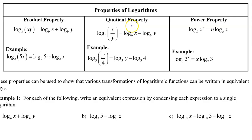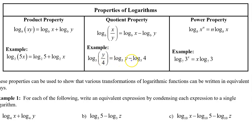Next we have the quotient property. The log of x divided by y can be rewritten as the log of x minus the log of y. For example, the log of y over 4 could be written as the log of y minus the log of 4.